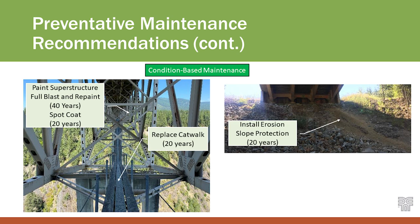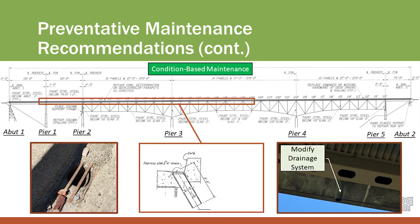The big item, as Greg talked about, was the paint. We narrowed it down to essentially two paint strategies: one is a full blast and repaint with an assumed 40-year life, and the second is a spot coat with an assumed 20-year life. These lifespans are for planning purposes; throughout the life of the bridge there would be inspections to verify them. In addition, we need to address the drainage — if we're going to fix the paint, we need to fix the drainage. We want to collect the water, reroute it, and discharge it somewhere it won't cause problems anymore.